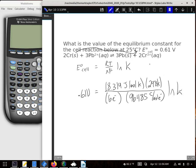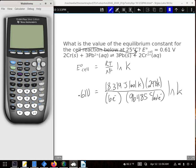Now we're just going to solve for that K. So 0.61 times 6 times 96,485 divided by 8.314, also divided by 298. Gives us this number right here.